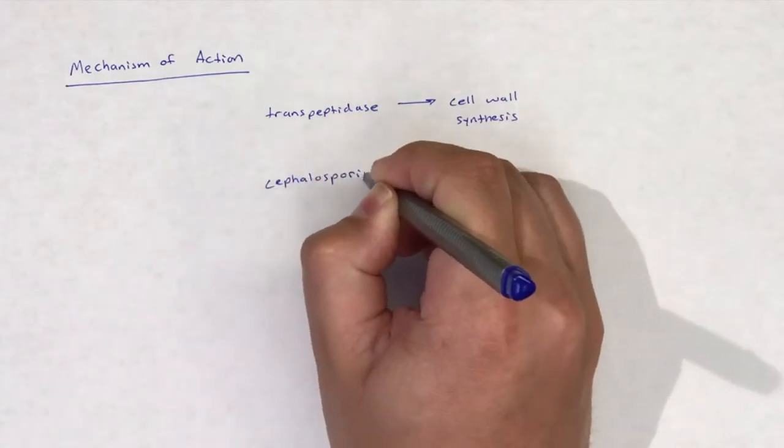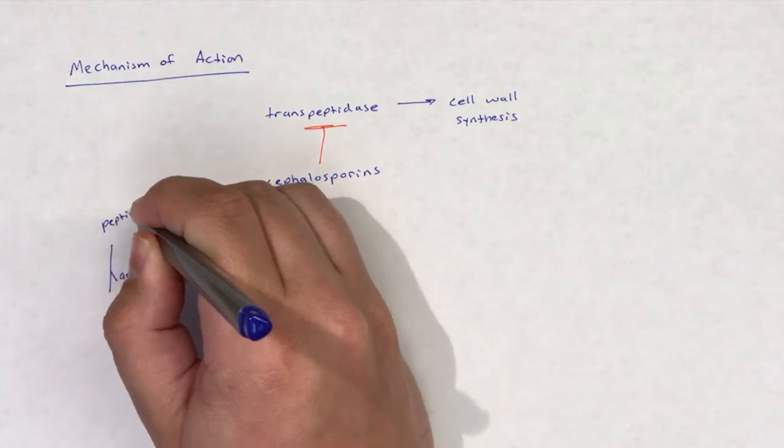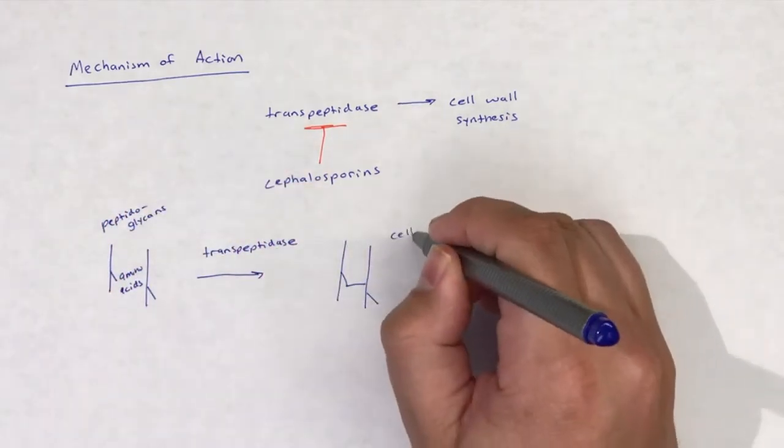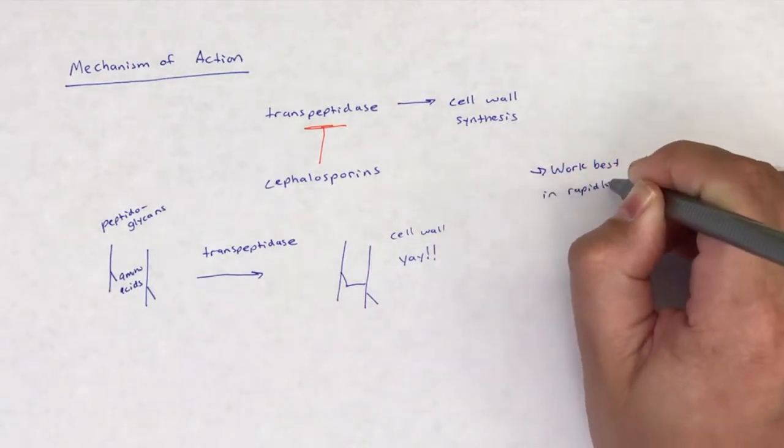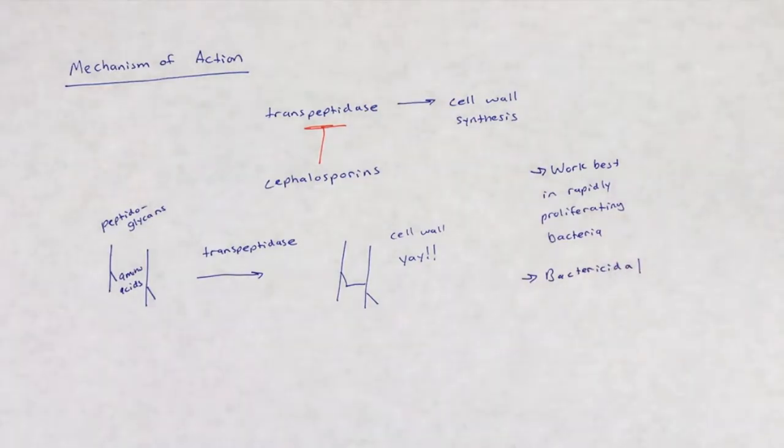Cephalosporins are cell wall synthesis inhibitors and are bactericidal. They kill bacteria by interfering with the transpeptidation reaction by binding to and inhibiting transpeptidase. For more details on this mechanism, refer to the video that focuses on cephalosporins as a whole.